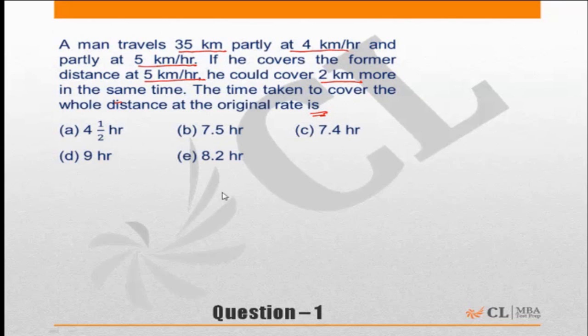A very straightforward question, but unfortunately many of us tend to make the question difficult or confuse ourselves. Effectively, the question says: in the given amount of time, if a person travels partly at 4 kilometers per hour and partly at 5 kilometers per hour, he is able to do...